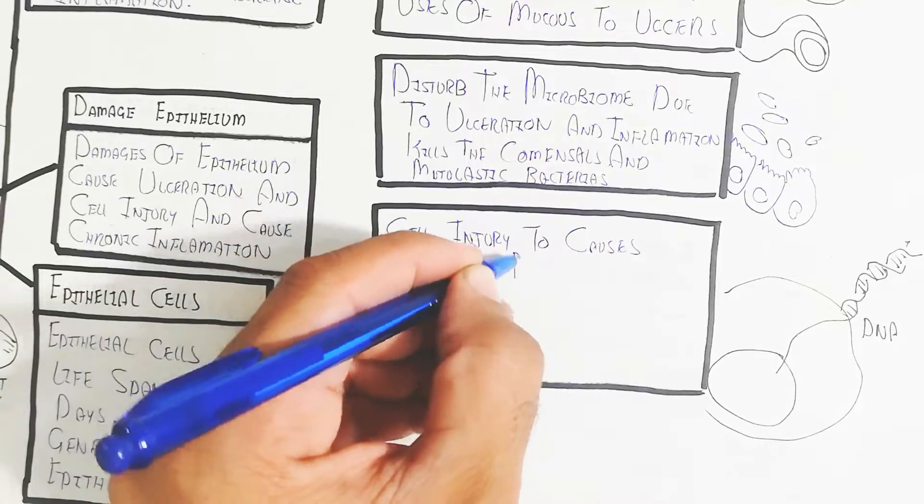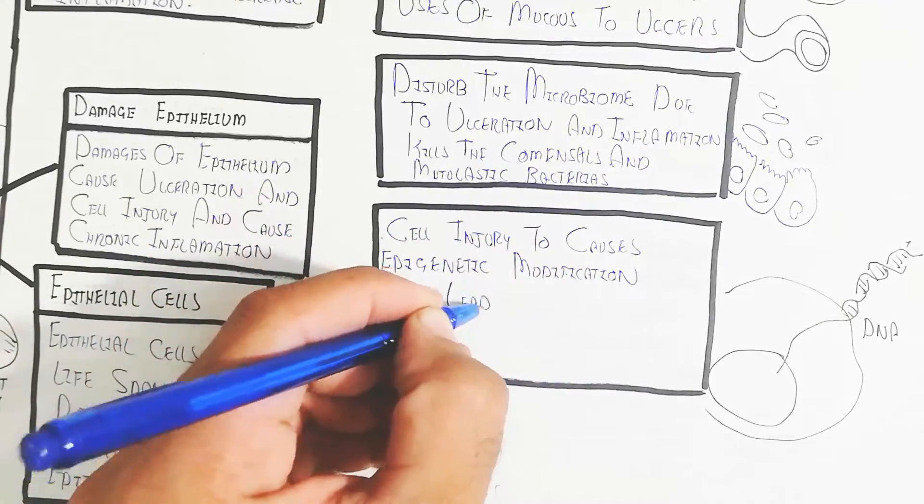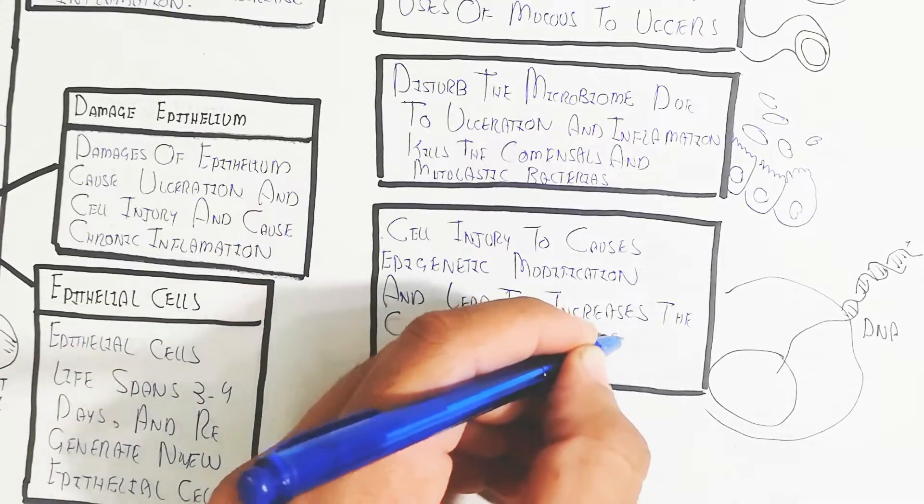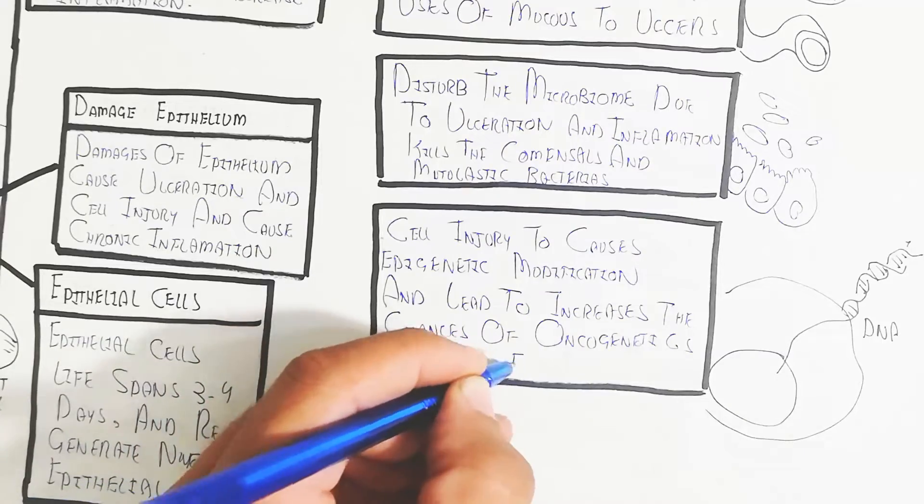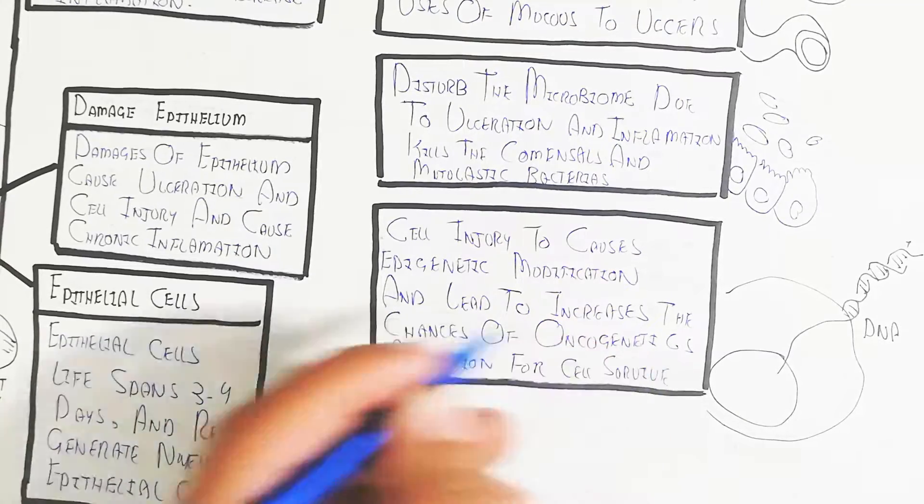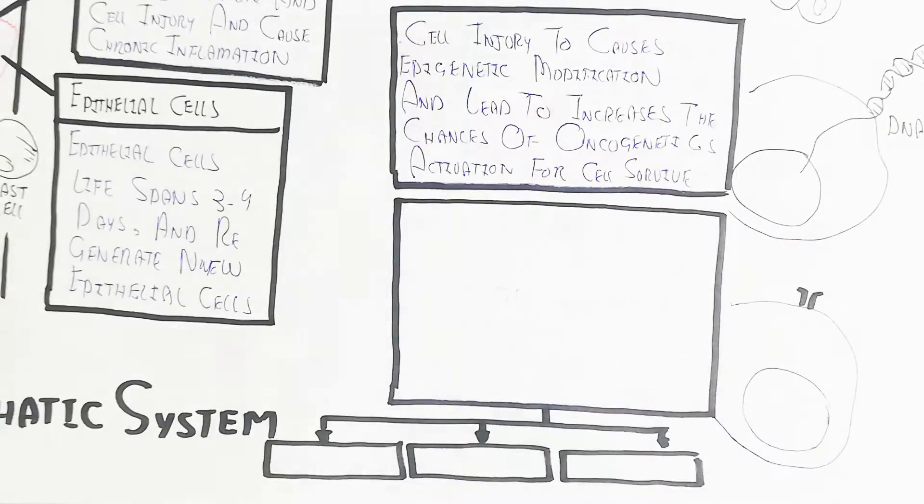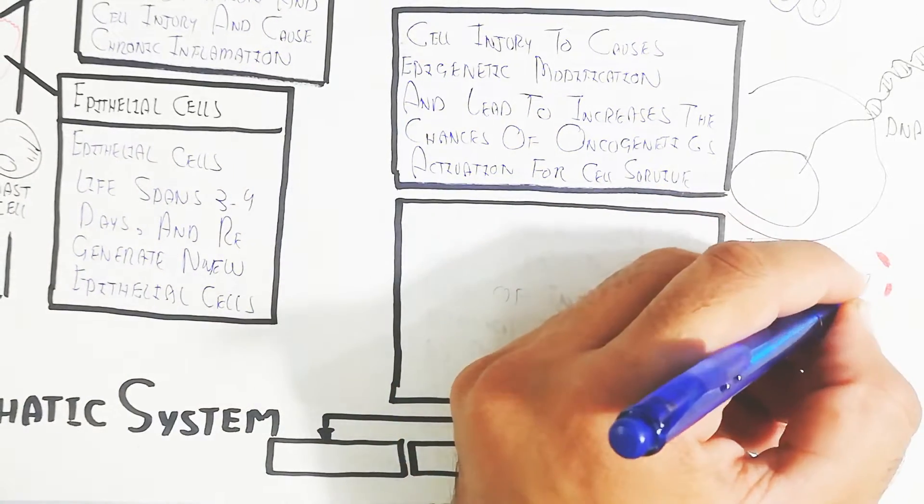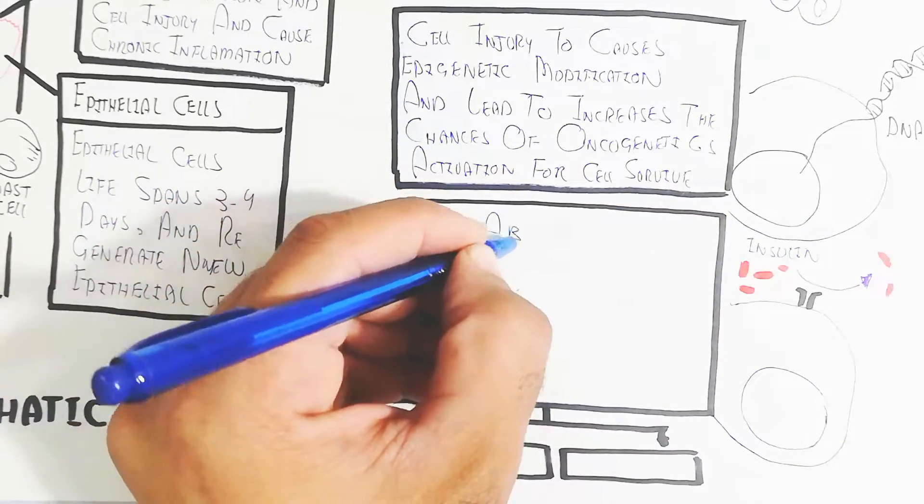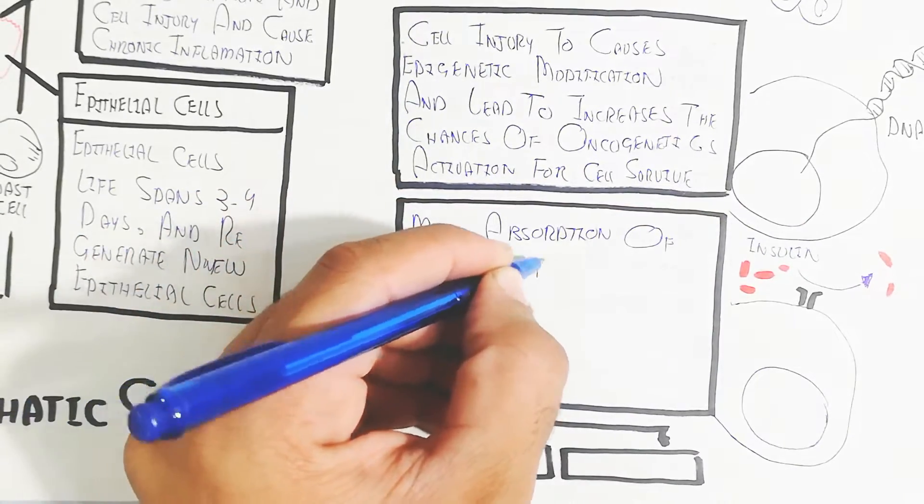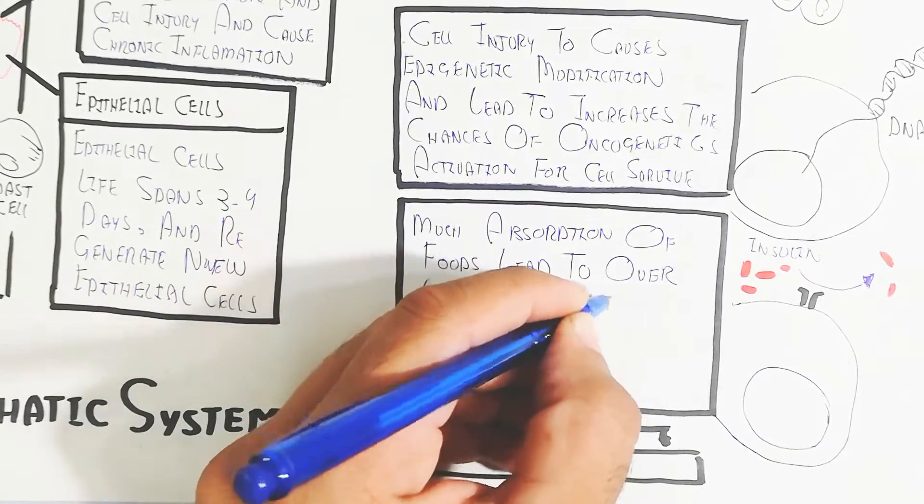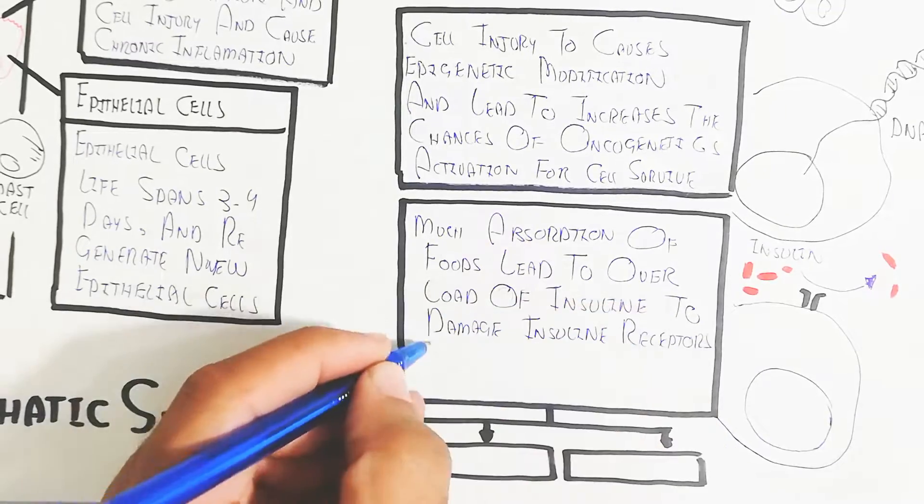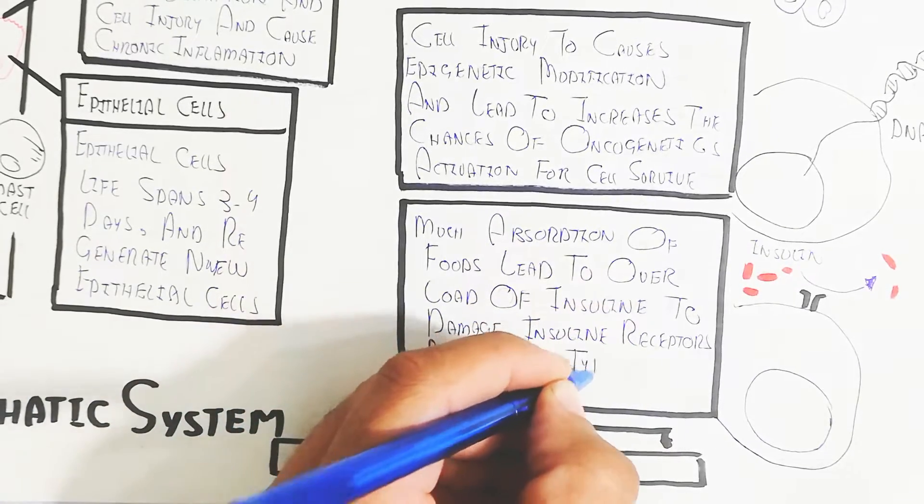Cell injury can occur due to epigenetic mutation and leads to increased chances of oncogene activation for cell survival. The cell wants to survive but epigenetic mutation leads to DNA damage and other problems. Food also itself causes damage to the epithelium leading to colorectal cancer and colon cancer - descending, transverse, and ascending.